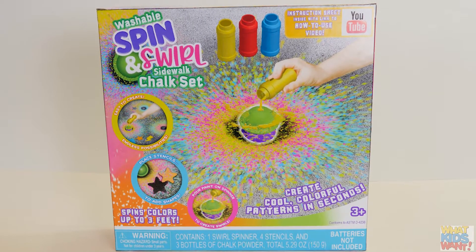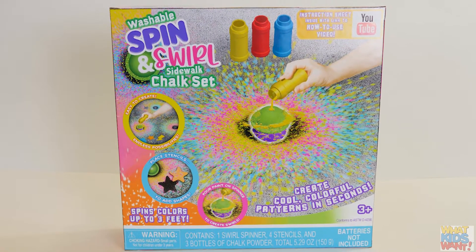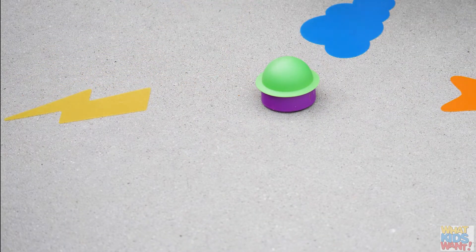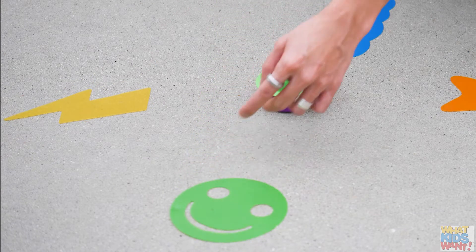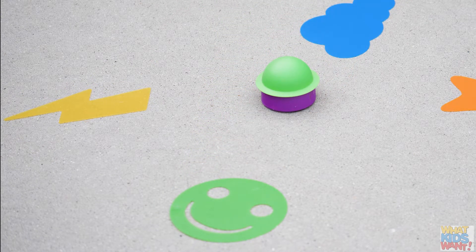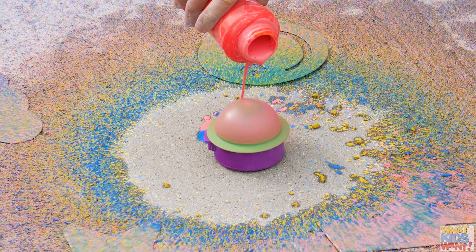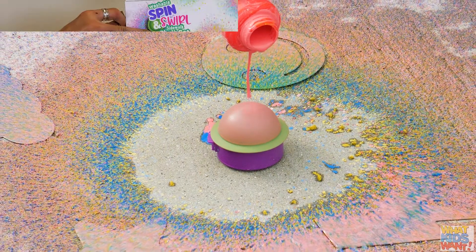Thank you for purchasing What Kids Want Washable Spin and Swirl Sidewalk Chalk Set. You will have hours of fun creating cool and colorful patterns with chalk paint and stencils. The chalk paint spinner spins the chalk paint up to a 36 inch diameter and sometimes even to a larger size.